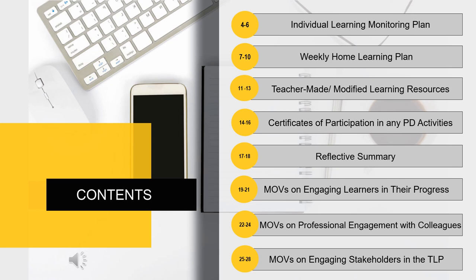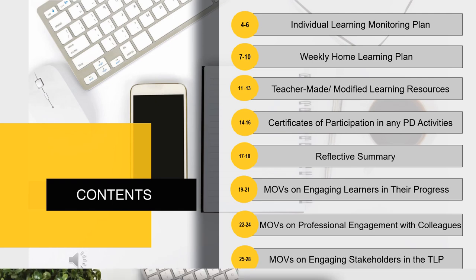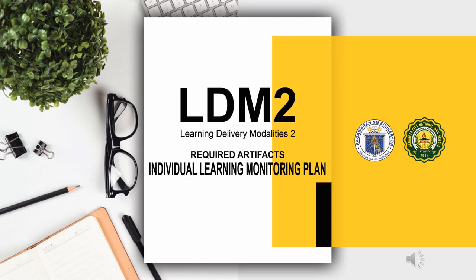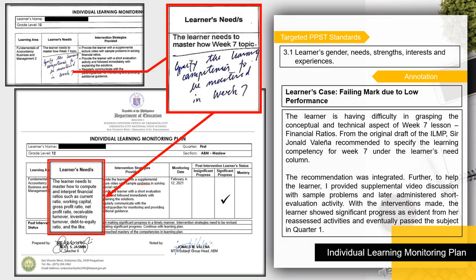These are the samples of the Individual Learning Monitoring Plan as a required artifact. The targeted PPST standard for the Individual Learning Monitoring Plan as a required artifact is 3.1 — Learners' gender, needs, strengths, interests, and experiences.